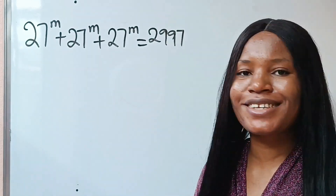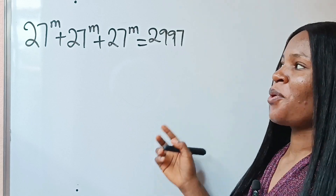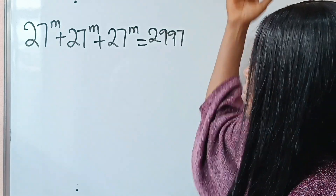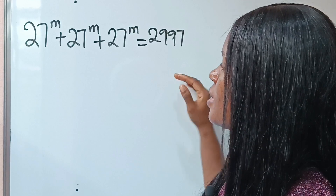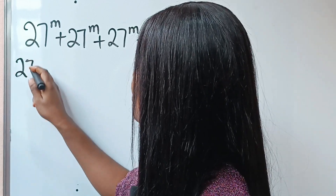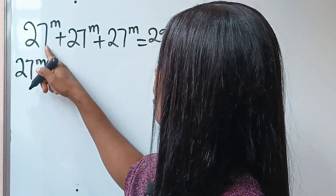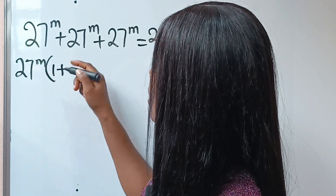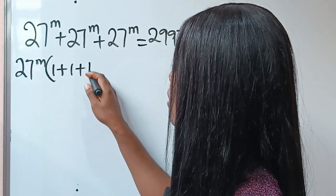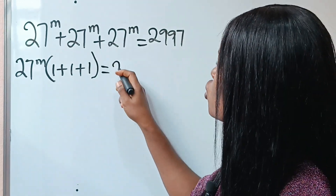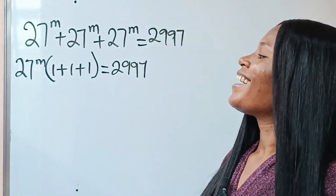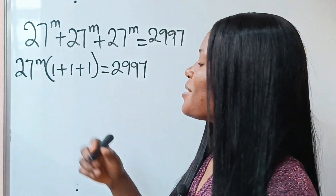It's another amazing Math Olympian question. Now let's find the value of m. We have 27 to the power of m in three places — what do they have in common? So we're going to start from there. When each is divided by itself we have one, and when this is summed it equals two thousand nine hundred and ninety-seven.